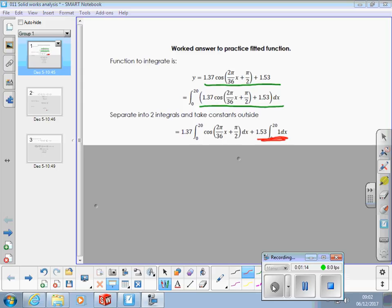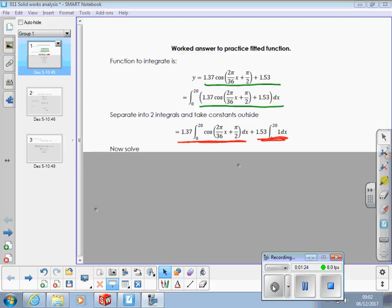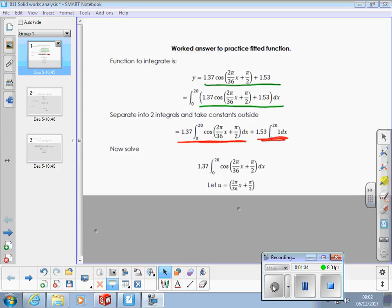It's this bit here that we need to apply integration by algebraic substitution to. So, we're looking to solve just that part first, the left-hand side, left-hand of the plus sign. So, we let u equal the function inside the cosine function.